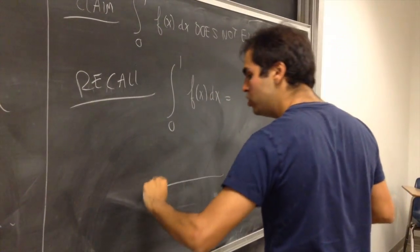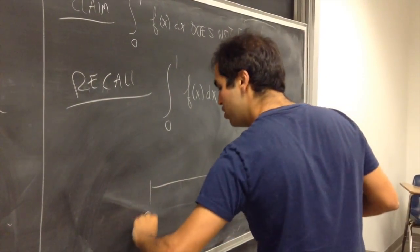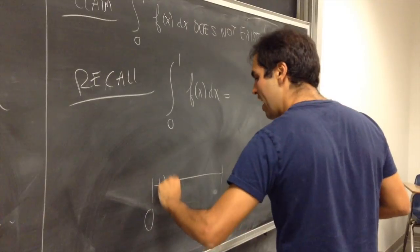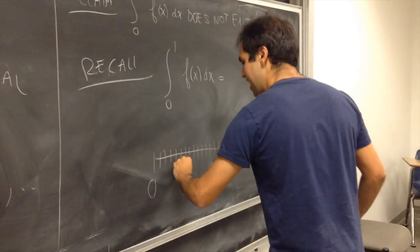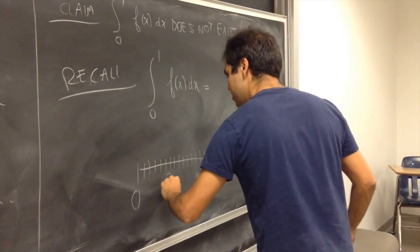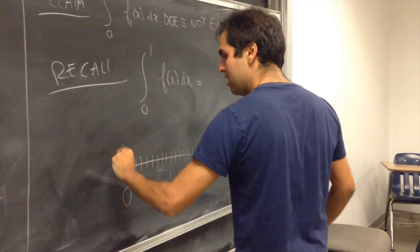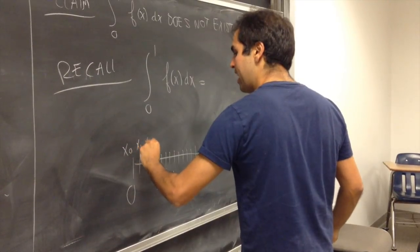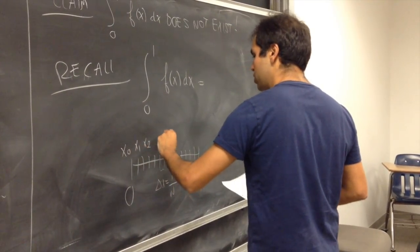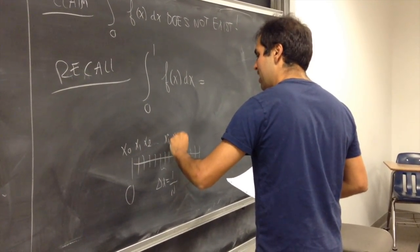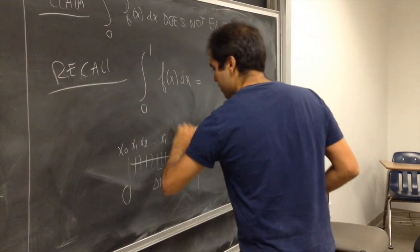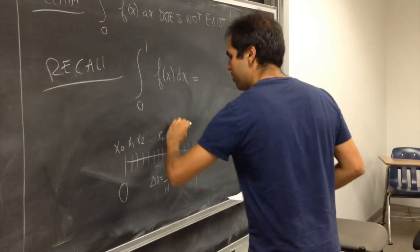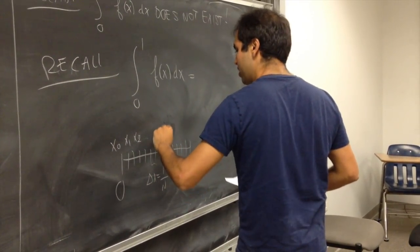The way you do it, remember you cut 0, 1 into n equal pieces, okay? And then each piece has length delta x, which in this case is 1 over n. Then you have those little points, x0, x1, x2, xi, xi plus 1.